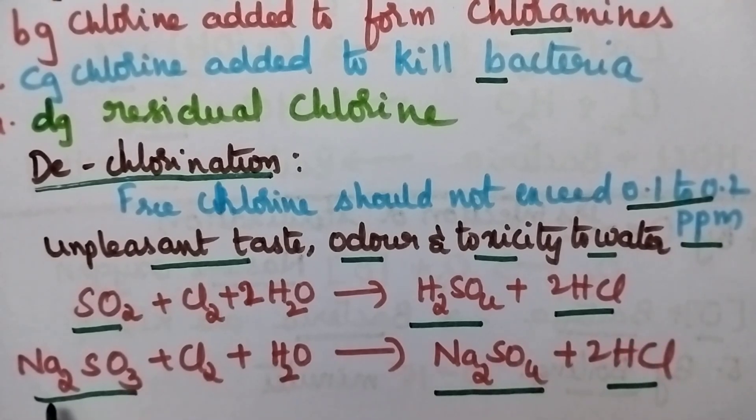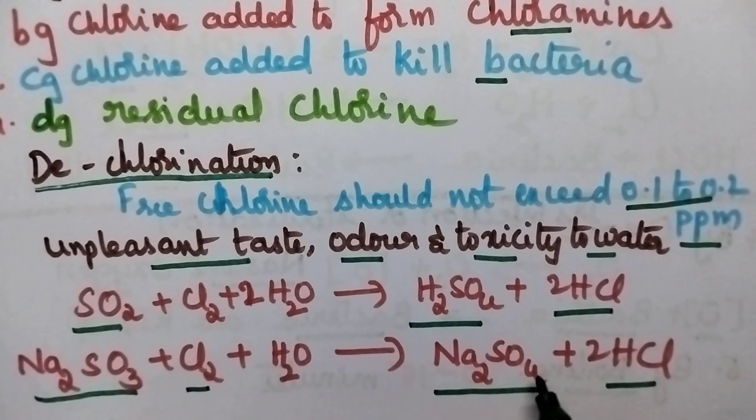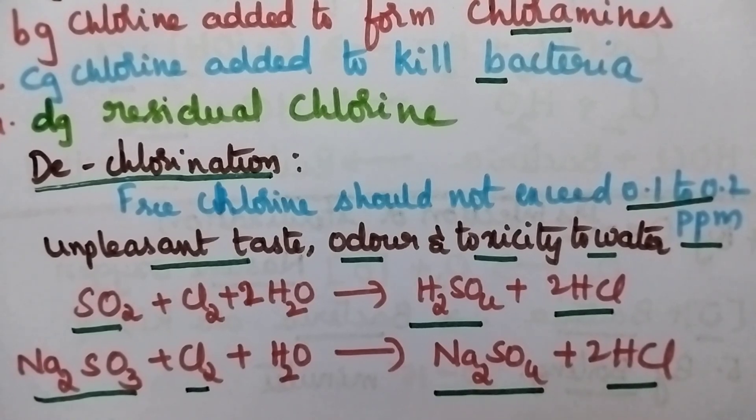Similarly, whenever sodium sulfite is added to the chlorinated water, it reacts with chlorine resulting in the formation of sodium sulfate and HCl, and thus excess free chlorine present in the water can be removed.